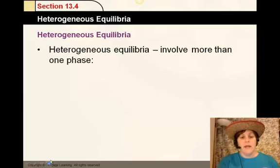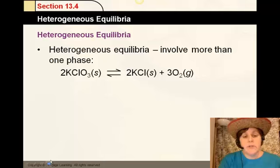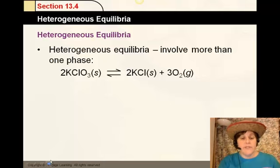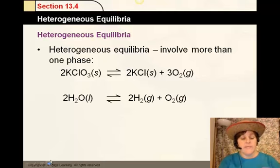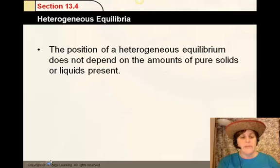Heterogeneous equilibria involve more than one phase. For example, here we have potassium chlorate breaking down into a solid and a gas. Obviously, these are different phases of matter, and that's why it's called heterogeneous. Same here, water liquid breaking down into its gaseous components, obviously through electrolysis. Notice they have different phases of matter, and that's called heterogeneous equilibria. Equilibria can be achieved with any of those things.